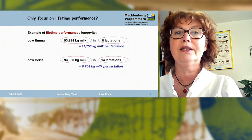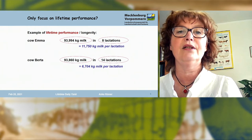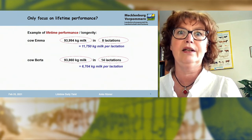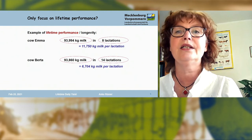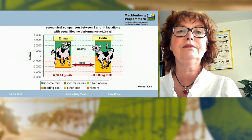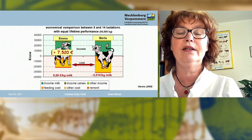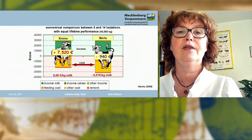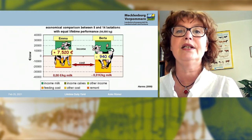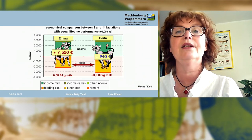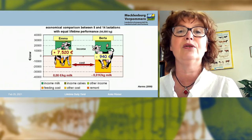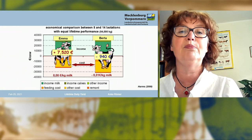And cow two, Beta, reached nearly 94,000 kilograms of milk too, but she did 14 lactations, 14 calves — that's 6,700 kilograms per lactation. Our economist analyzed the profit of both cows. Emma, with eight calves, has a profit of 7,500 euros. And Beta? With 14 lactations, the profit is nothing. With only 6,700 kilograms milk per lactation, there's no profit possible given the actual cost of milk production and the actual milk price in Germany.